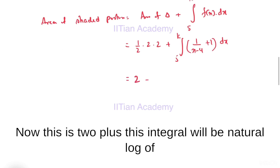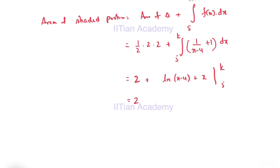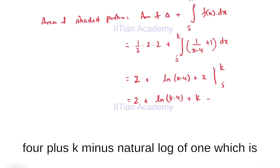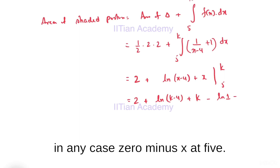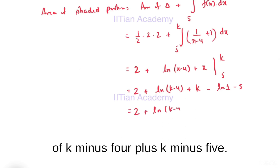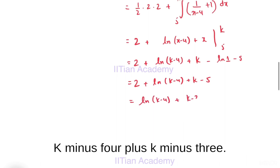This gives 2 plus the integral, which evaluates to [ln|x-4| + x] from 5 to K. So this will be 2 + ln(K-4) + K - ln(1) - 5. Since ln(1) = 0, this area simplifies to ln(K-4) + K - 3.